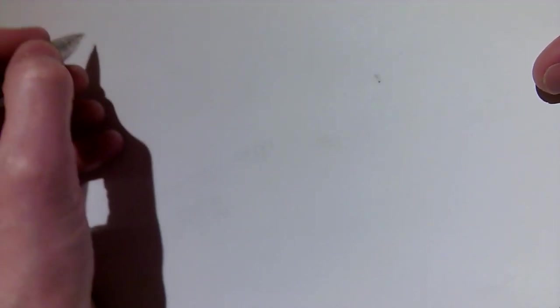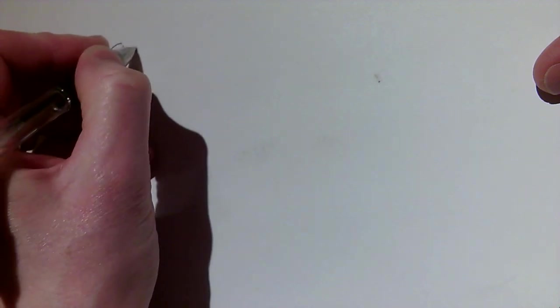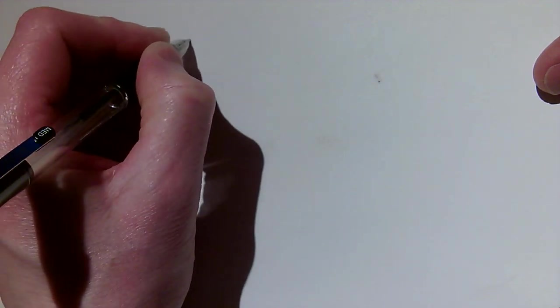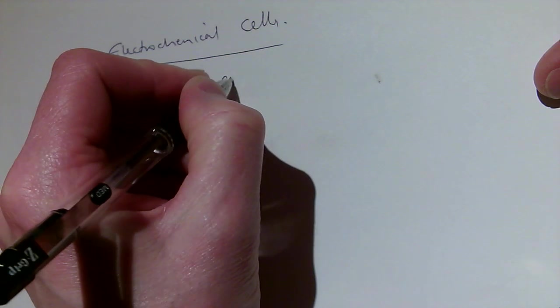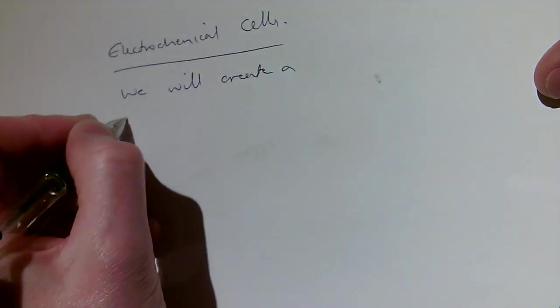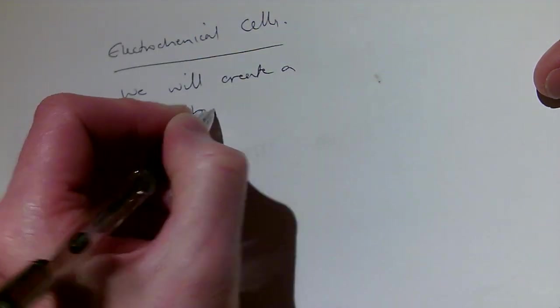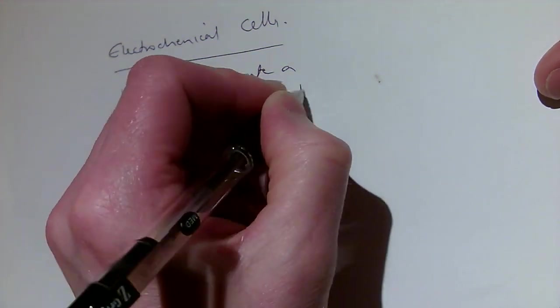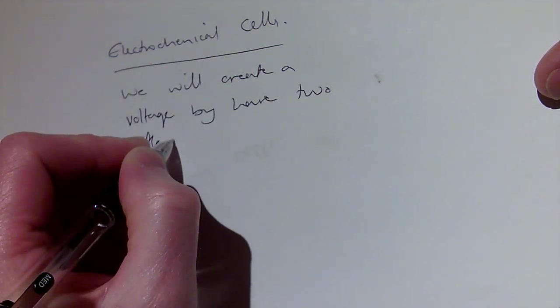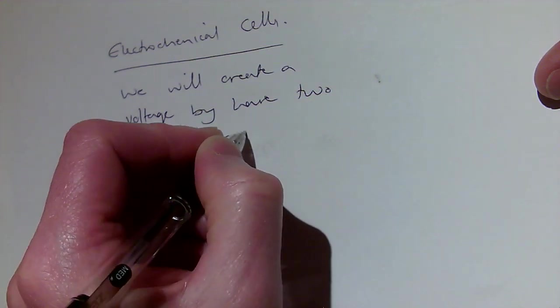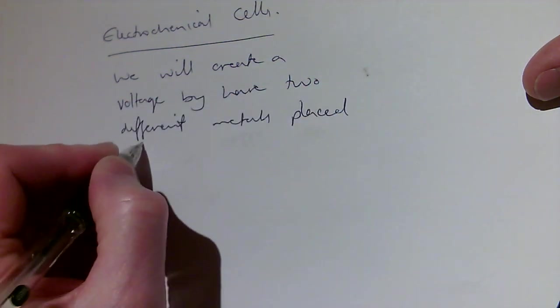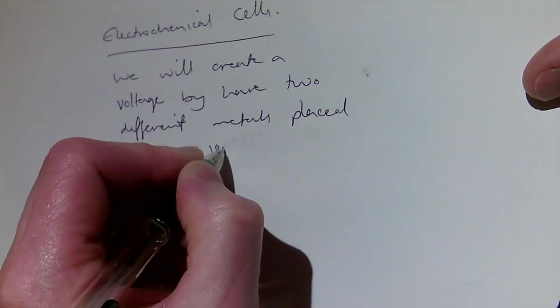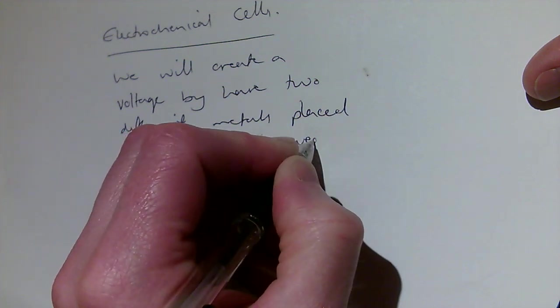Right, okay. Today we're going to have a look at electrochemical cells. The idea is that we will create a voltage by having two different metals placed into an ionic aqueous solution.